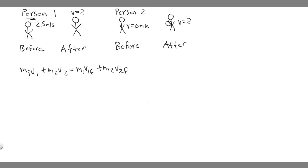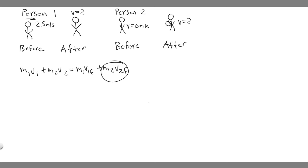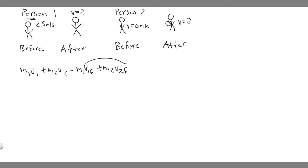Here, m1 is the person and m2 is the snowball. So the momentum of the person plus the momentum of the snowball equals the momentum of the person at the end plus the momentum of the snowball at the end. All we have to do is find these variables, plug them in, and solve.